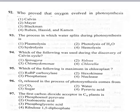Calvin proposed the C3 cycle. Meyer explained that light energy is converted into chemical energy in photosynthesis. Blackman proposed the law of limiting factors (Blackman's law). Ruben, Hacid and Kamen proved that oxygen is evolved from water during photosynthesis.